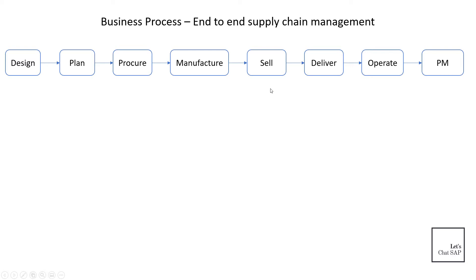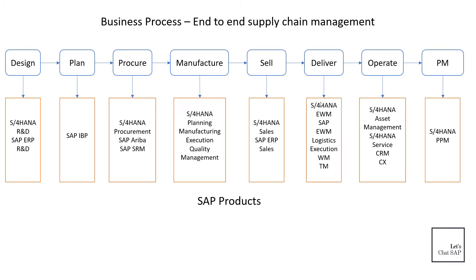Then actually build the factories and start manufacturing the shoes, and then sell them — to wholesalers, retailers, and distributors — and then deliver those shoes to those wholesalers, retailers, distributors, and customers. Because I may want to distribute to different states, cities, and countries. Then operate the whole business: maintain assets, factories, employees, raw materials, and shoes. And then project management, because all these end-to-end processes involve multiple projects, so we need project management software to manage them.